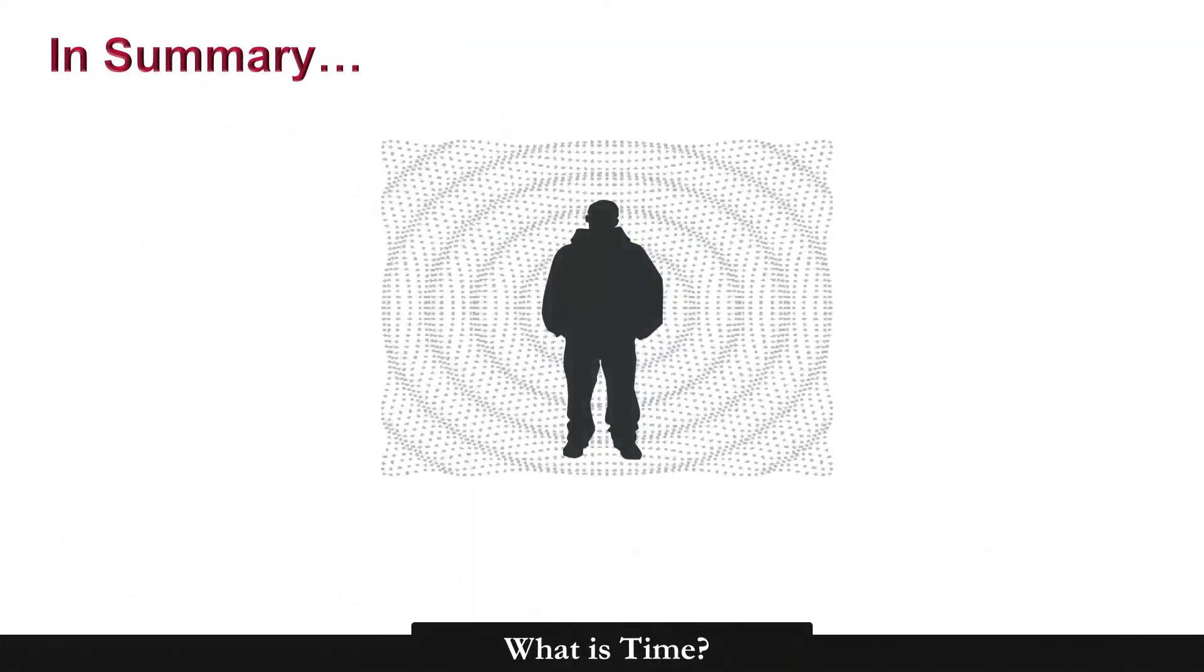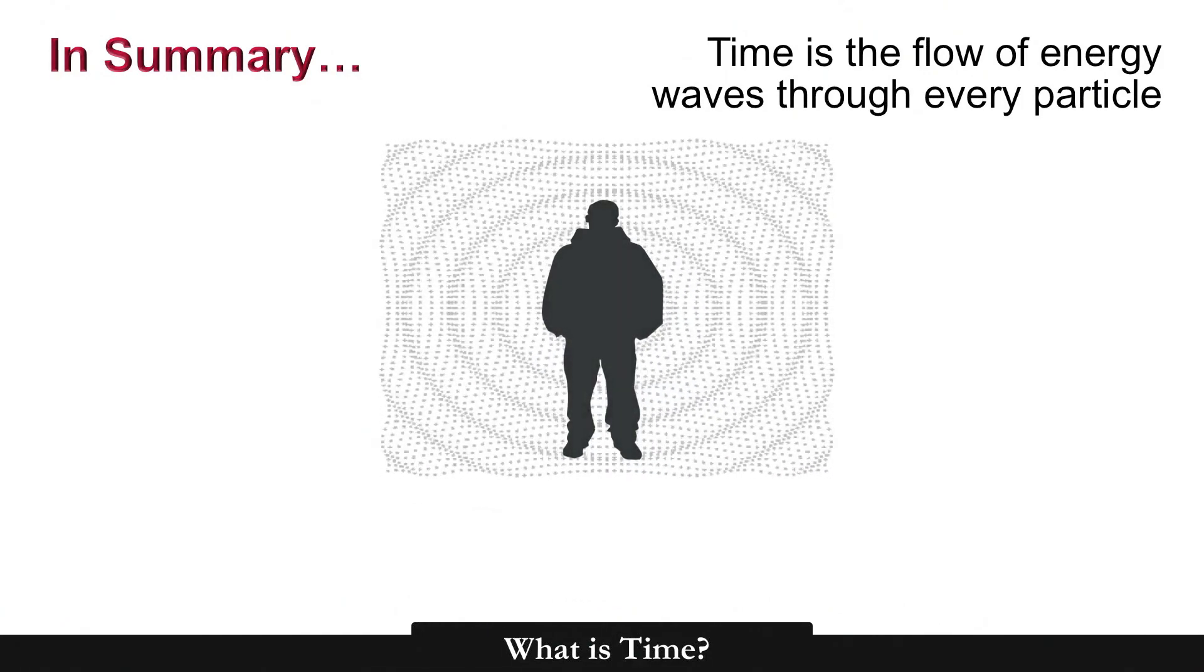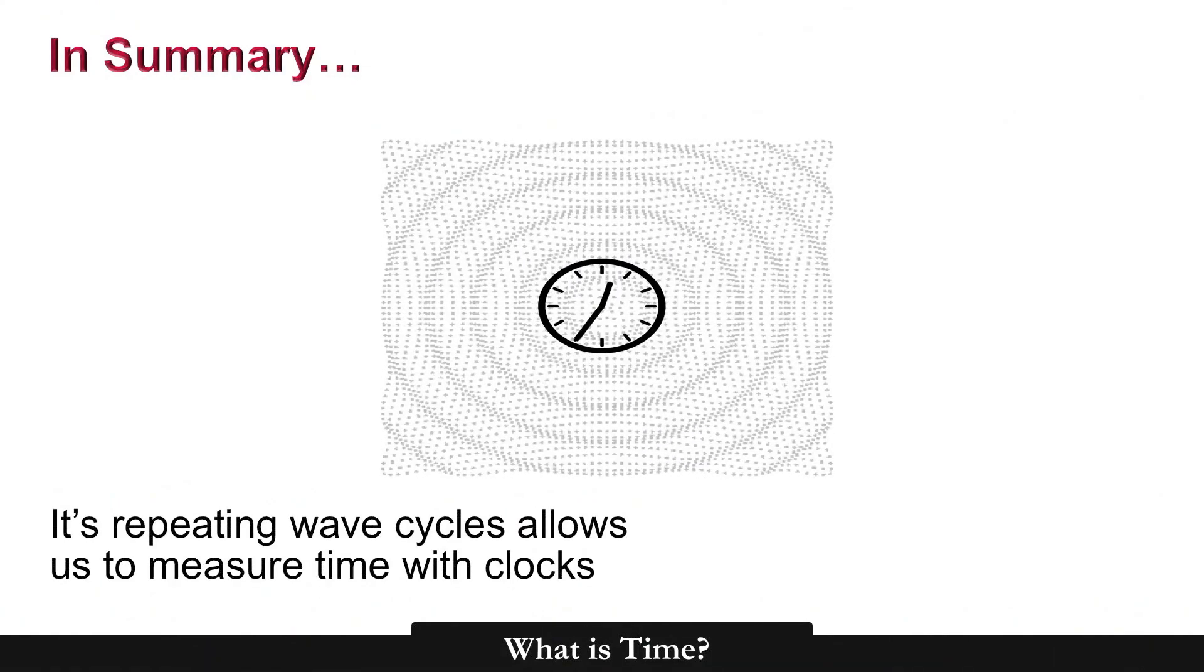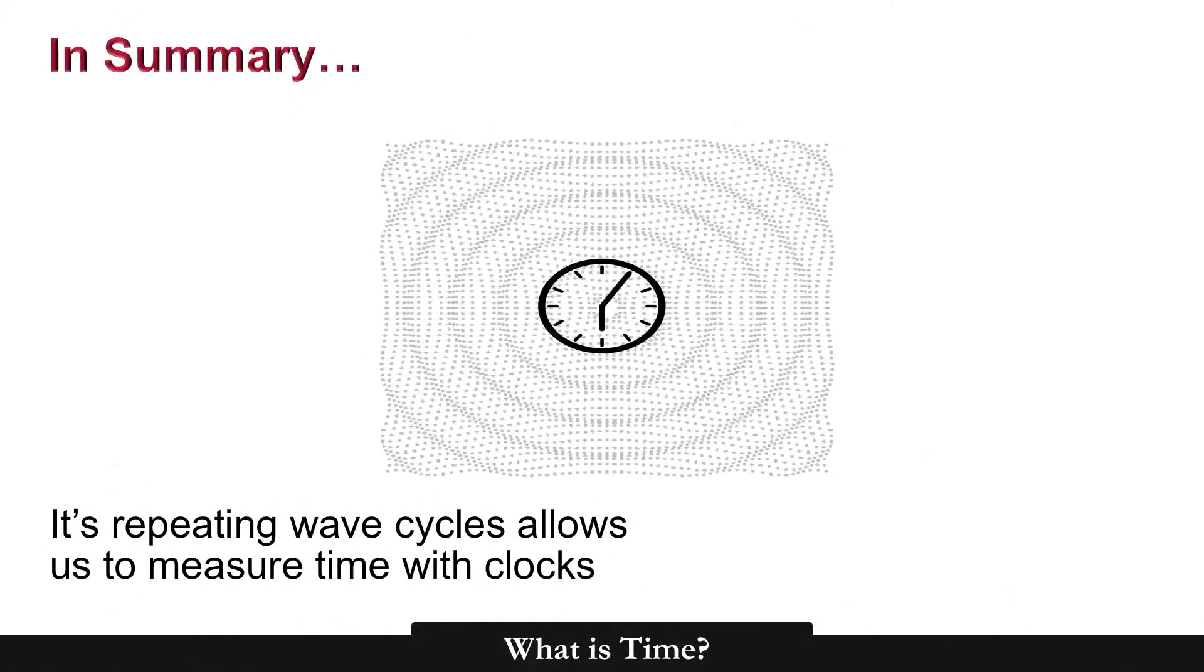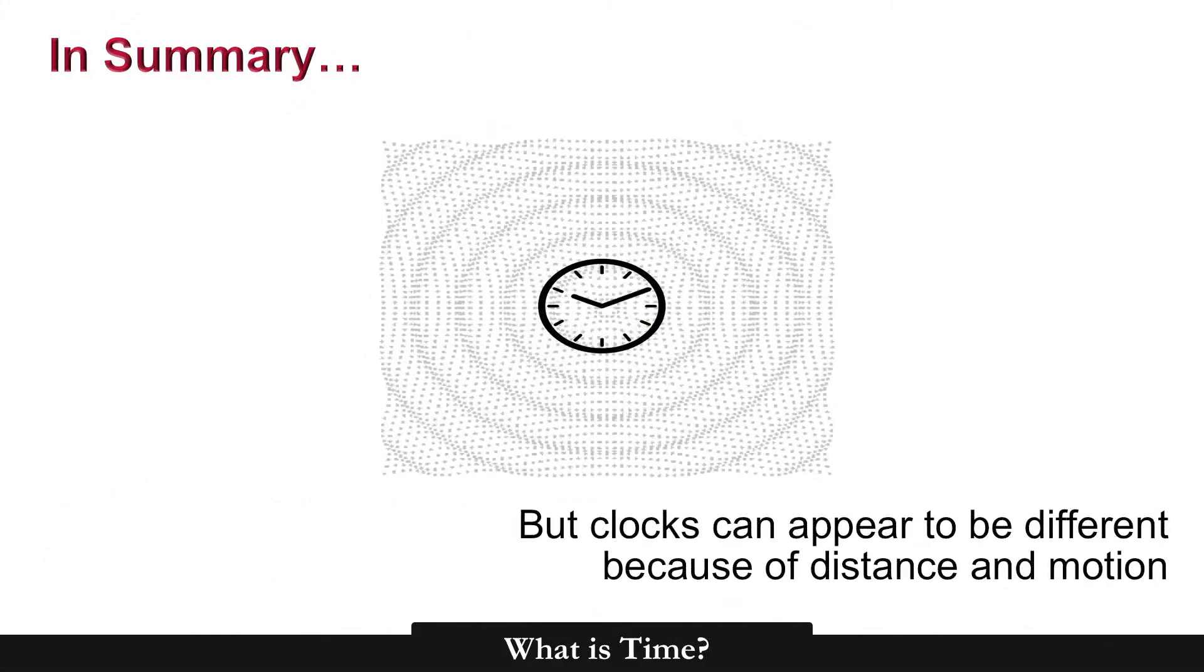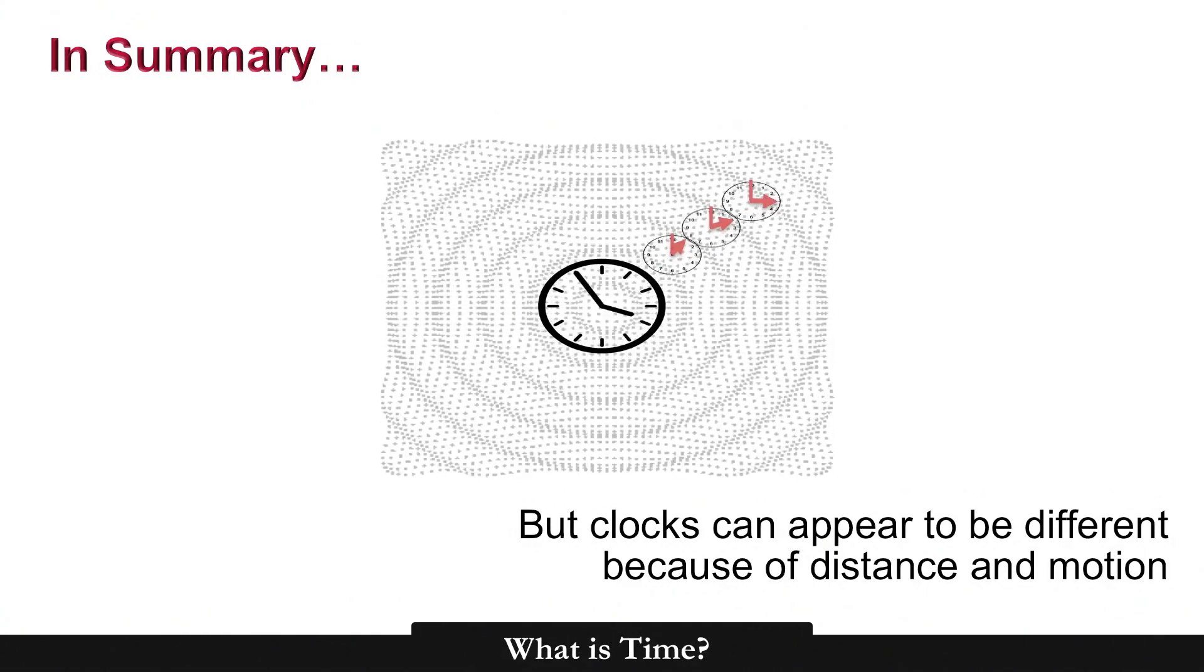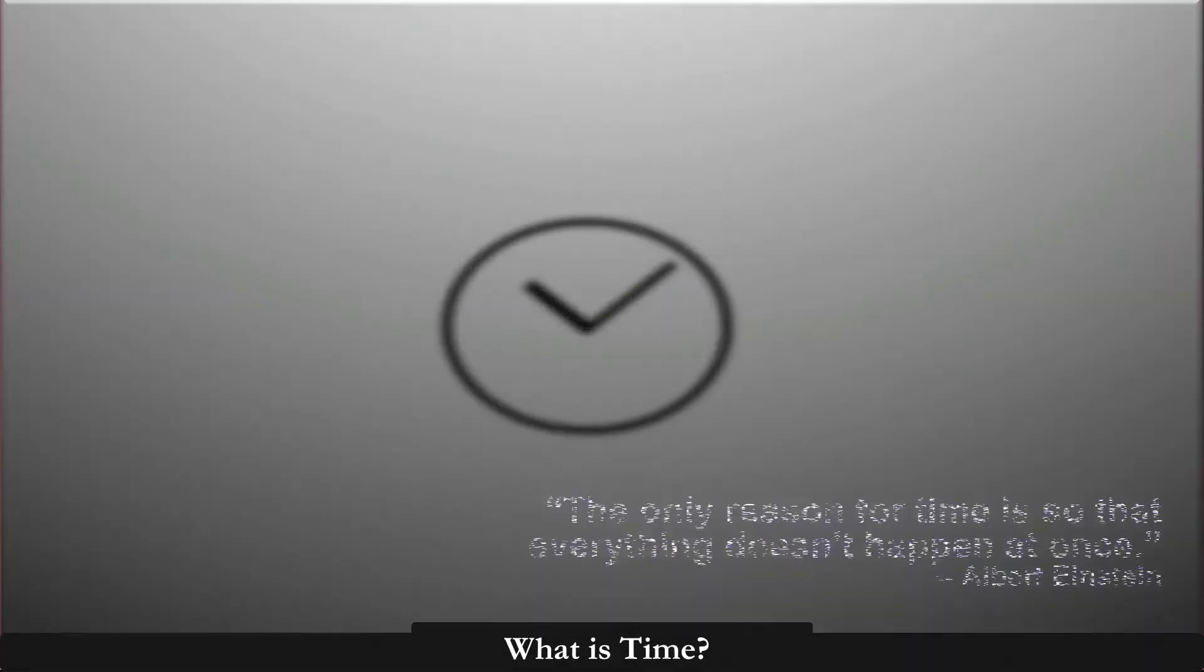In summary, time is the flow of energy waves through every particle. Its repeating wave cycles allow us to measure time with clocks. But clocks appear different because of distance and motion. That's all the time we have. Thanks for joining!